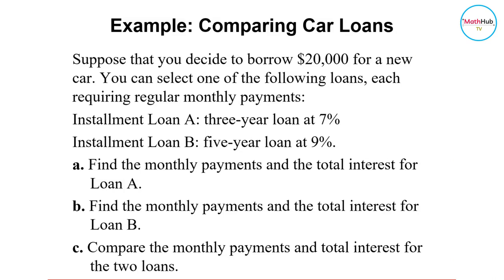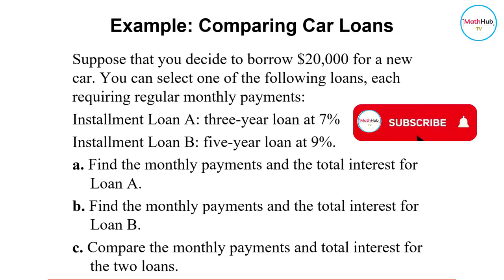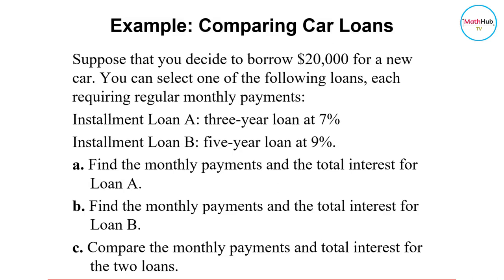Suppose that you decide to borrow $20,000 for a new car. You can select one of the following loans, each requiring regular monthly payments. Installment loan A is a three-year loan at 7%, and installment loan B is a five-year loan at 9%. Find the monthly payments and the total interest for loan A, and also do the same thing for loan B, then compare the monthly payments and the total interest for the two loans.